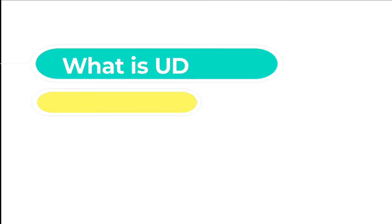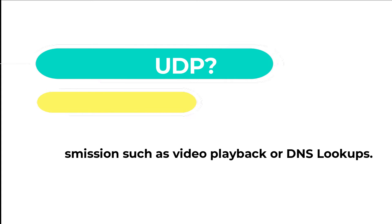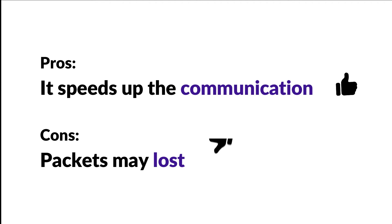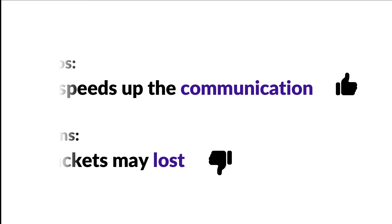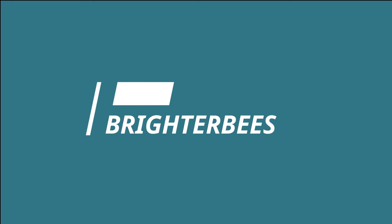So what is UDP? UDP is User Datagram Protocol — a communication protocol used across the internet especially for time-sensitive transmissions such as video playback or DNS lookups. It speeds up communication, but there may be a chance of losing packets. Now you have some idea about UDP, so let's jump right into the code.